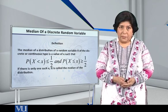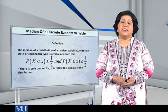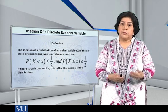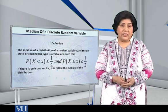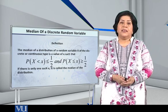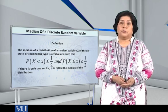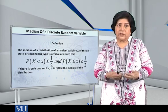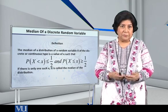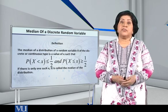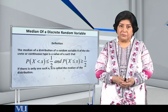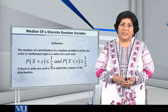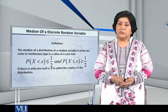Condition number one: the probability of capital X being less than small x, that probability is less than or equal to half. Condition number two: the probability of capital X being less than or equal to small x, this probability is greater than or equal to half. And if there is only one such x, this x is called the median of the distribution.